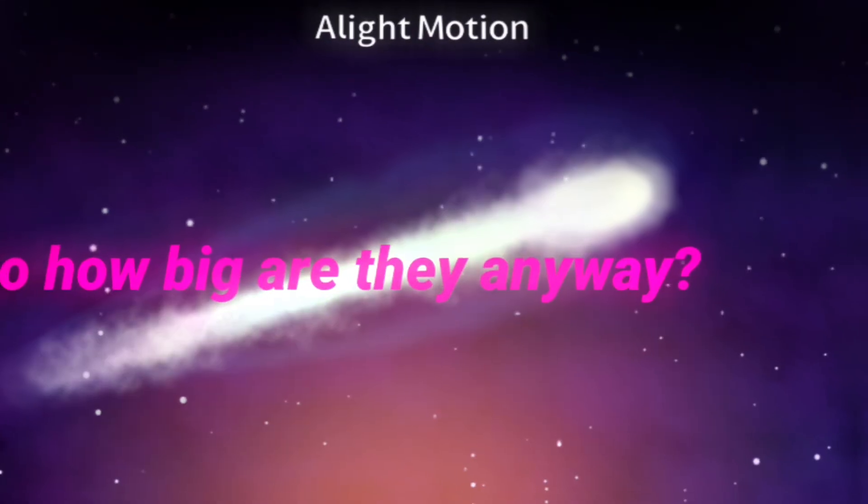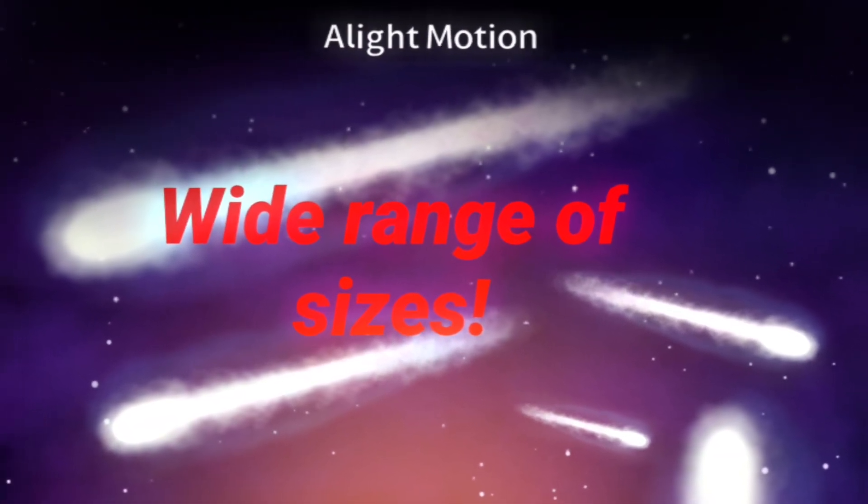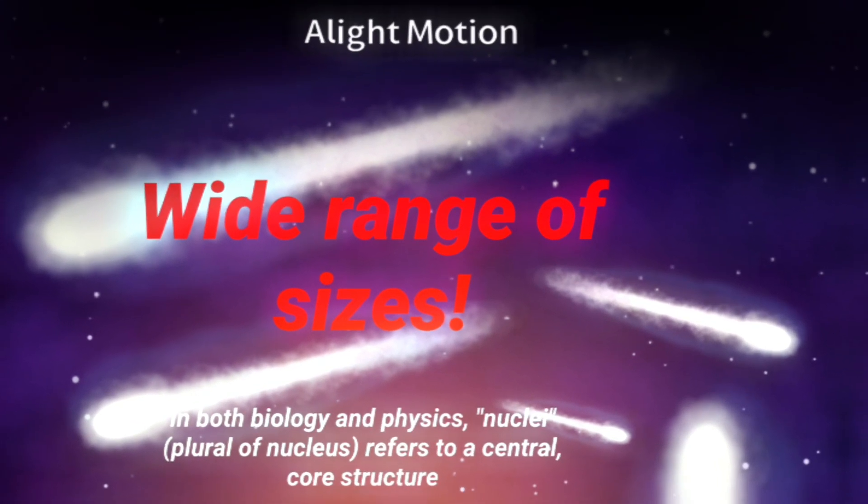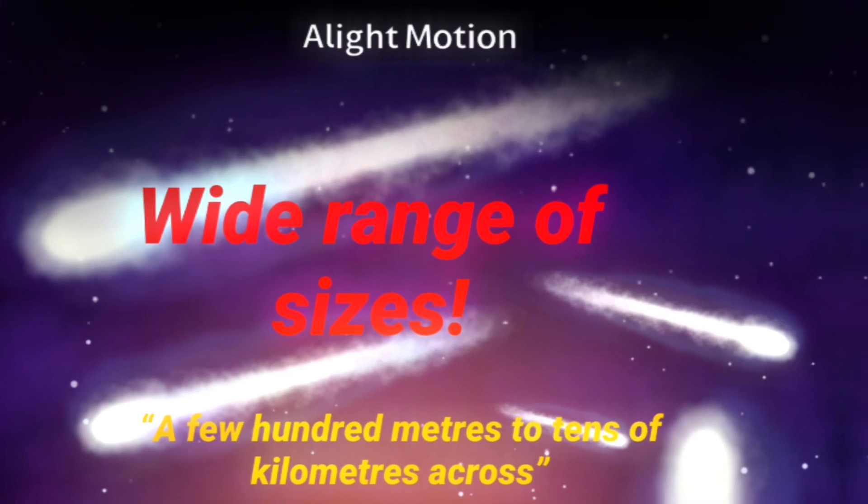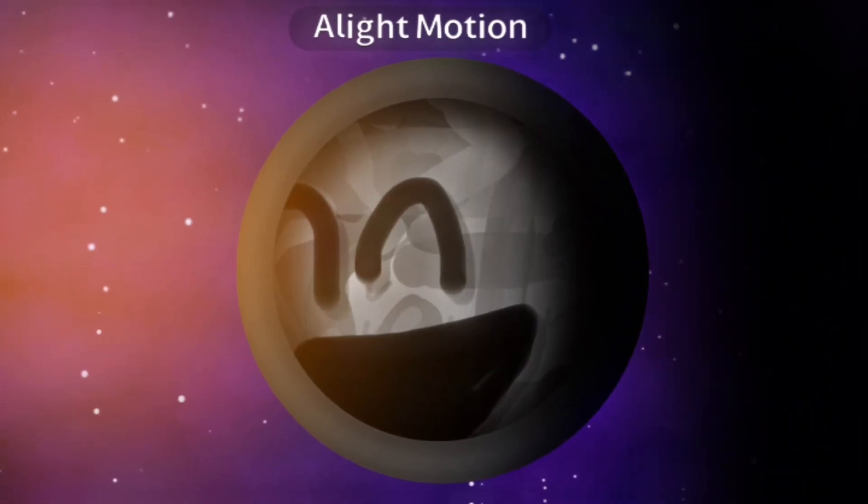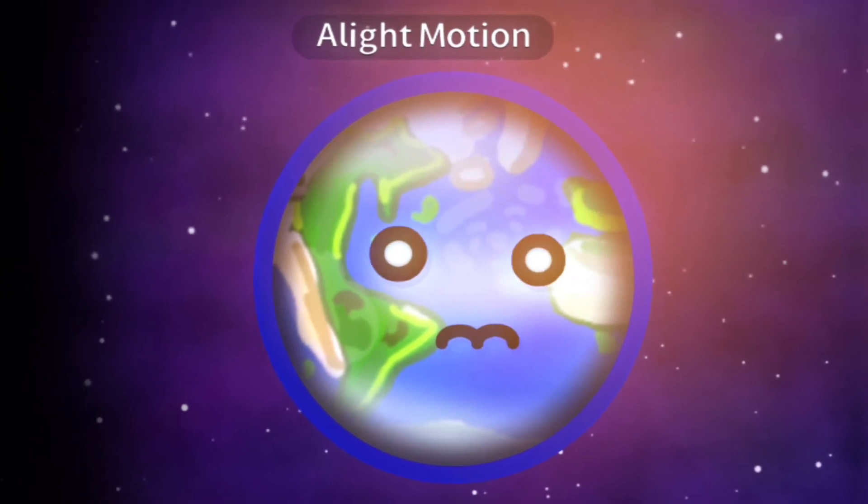Right, and how big are they anyway? Comets come in a wide range of sizes, but generally their solid nuclei are small, typically ranging from a few hundred meters to tens of kilometers across. Owww, that's cool. And what will happen if they crash into you?